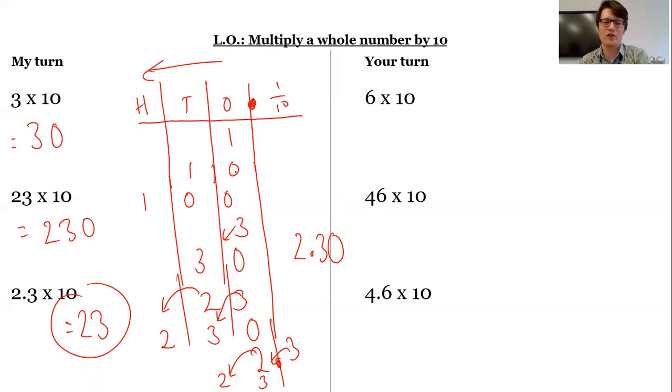So again, my six ones will have become six tens. So I need that place value placeholder in the ones to show there are no ones and six tens.